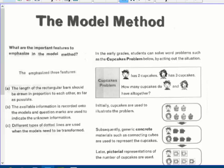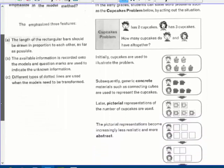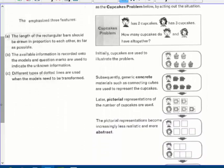Different types of dotted lines are used when the model needs to be transformed or changed. So in the early grades, students can solve word problems such as the cupcake problem below by acting out the situation. Okay. Henry, let's say, or whoever it is, has two cupcakes and Susie has three cupcakes. How many cupcakes do Henry and Susie have all together? You could draw the picture here as you see. Then you could just make it in little, if you wanted to actually touch it,